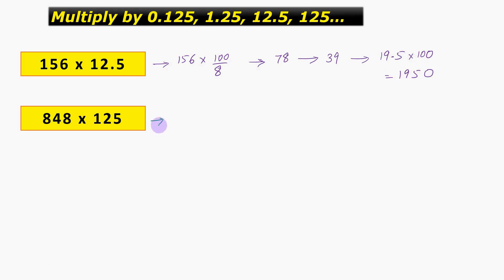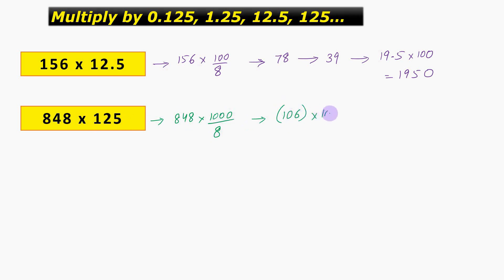We have 848 into 125. This will give us 848 into 1000 divided by 8, which gives us 106 into 1000. This can be done in one step only because 848 is divisible by 8. When 848 is divided by 8 we get 106, and this can be done mentally, thereby giving us the answer as 106000.